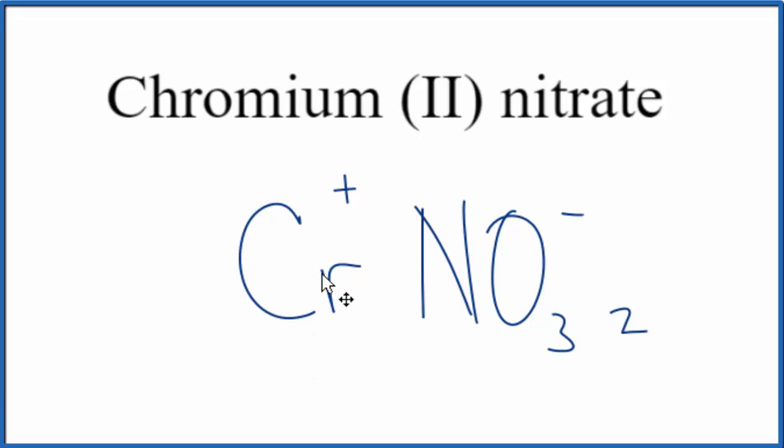So at this point, we have this chromium, the nitrate, we have 2 nitrates. So we need to put parentheses around the nitrate here. And let's get rid of the charges. And this is the formula for chromium 2 nitrate.